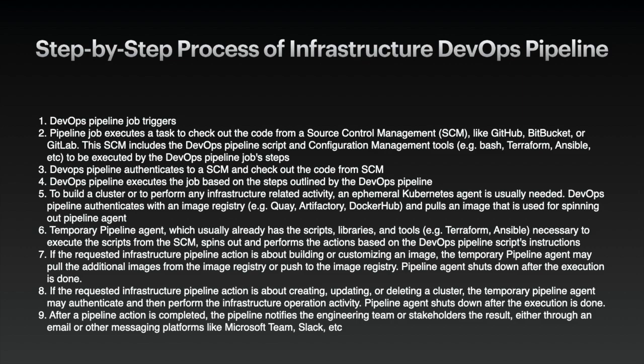Step six, the temporary pipeline agent, which usually already has scripts, libraries, and tools — for example, Terraform or Ansible — necessary to execute a script from the SCM, spins up and performs actions based on the DevOps pipeline script instructions. Step seven, if the requested infrastructure pipeline action is about building or customizing an image, the temporary pipeline agent may pull additional images from the image registry or push to the image registry. The pipeline agent shuts down after execution is done.